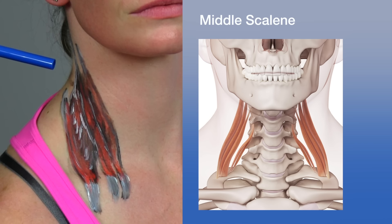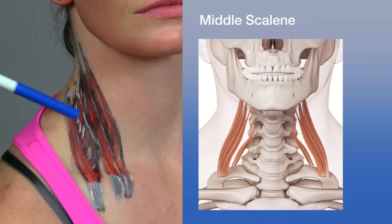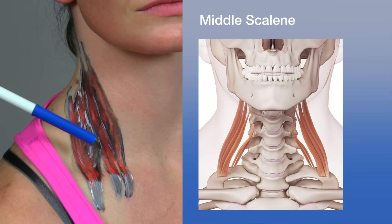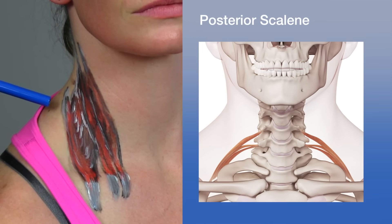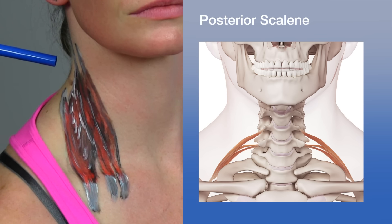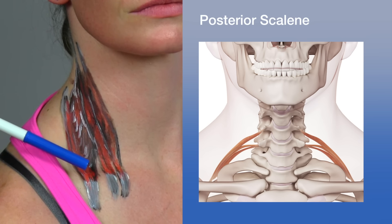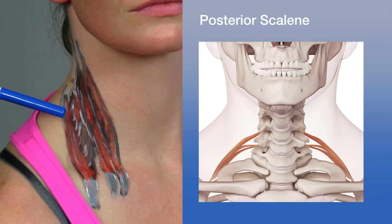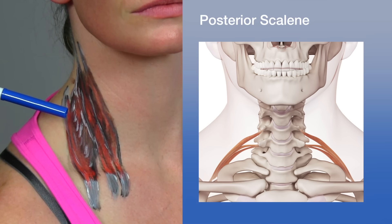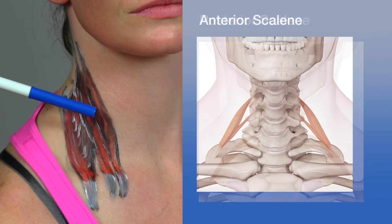Shrugging the shoulders — elevation — contracts the upper trapezius fibers and lifts the scapula upward. When the lower portion returns the scapula from this elevated position, the action is called depression. The trapezius also helps tilt the head backward, which is extension of the neck, while the scapula remains stationary, stabilized by the fibers of the middle portion.